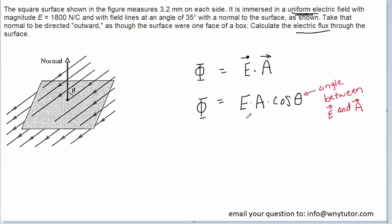Looking at the three values on the right-hand side of the equation, E is the magnitude of the electric field, and that was given to us as 1800 newtons per coulomb, so that's straightforward.